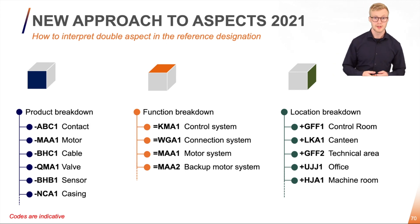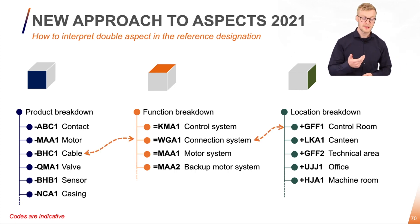So for example, you can make a product breakdown. You can also make a functional breakdown. And lastly, a location breakdown of your system. And keep the aspects separate. We then relate the structures together in order to tell that this function is realizing this object, which is located at this location.